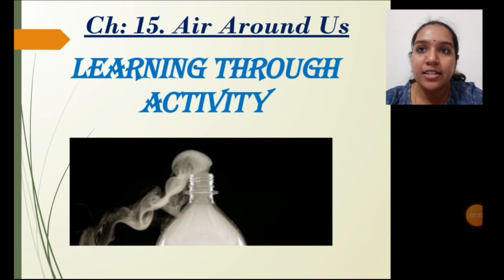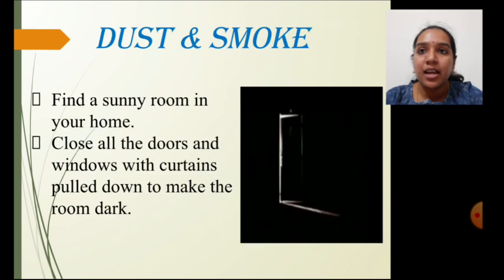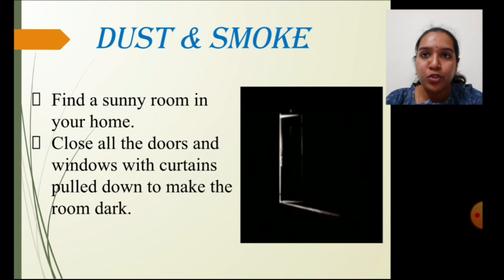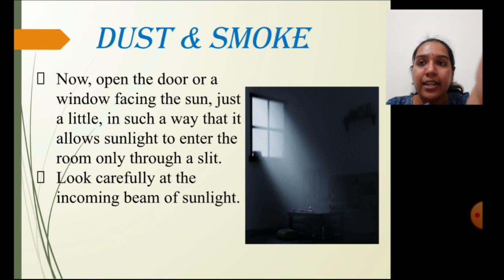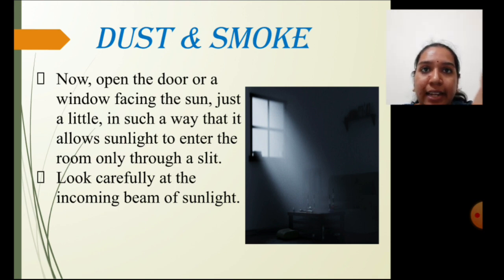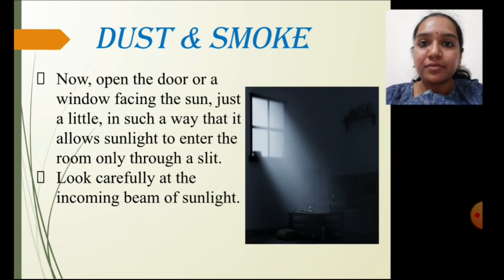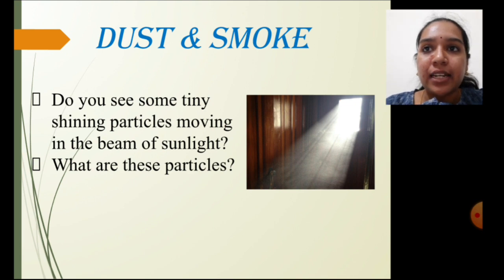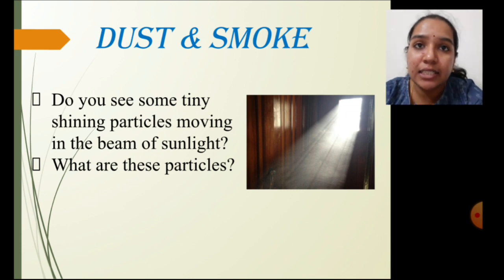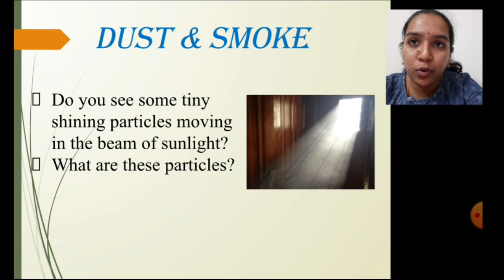Let us understand this concept through an activity. Go to a ventilated room in your home, switch off all the lights, and close all the doors, windows, and curtains to make the room very dark. Now open a door or window just a little where sunlight is facing, allowing sunlight to enter through the opening. Look carefully at the sunlight entering your room — do you see small tiny shining particles moving in the path of the sunlight? These are nothing but dust particles entering your room along with the sunlight.